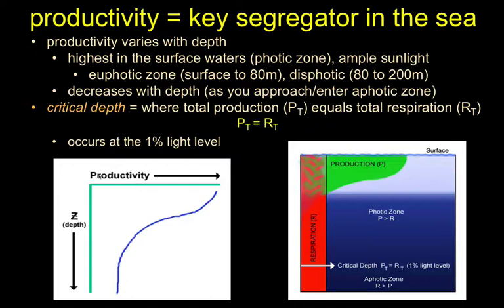I'm going to give you the rules of thumb we'll use from here on out. The euphotic zone — 'eu' meaning true — with the caveat that this depends on sediment in the water and a few other things, but on average the true photic zone is from the surface to about 80 meters in depth. At that depth we can have net positive photosynthesis for many things. With some critters it's more shallow than that, but the rule of thumb is pretty much all photosynthesis we'll see is above 80 meters.